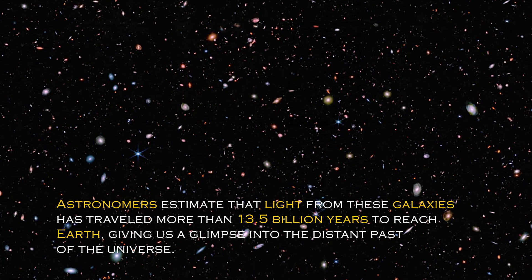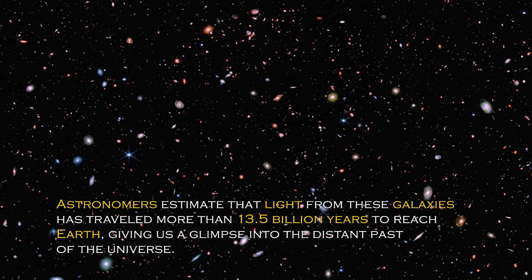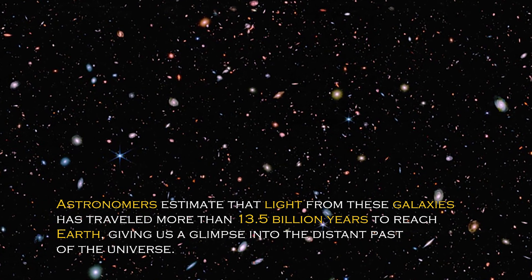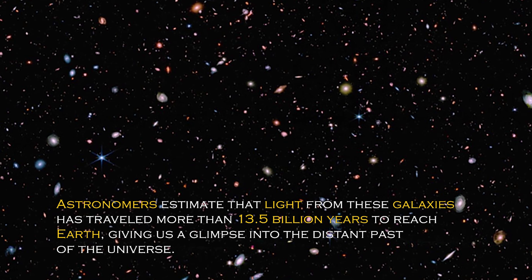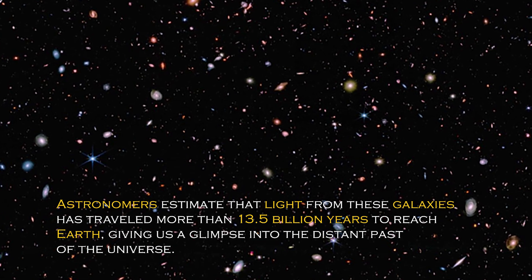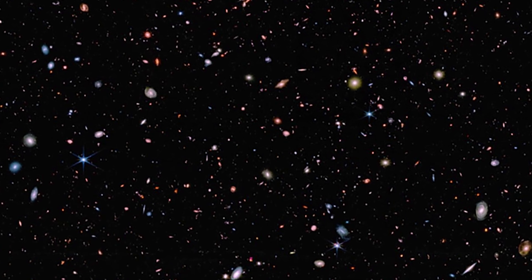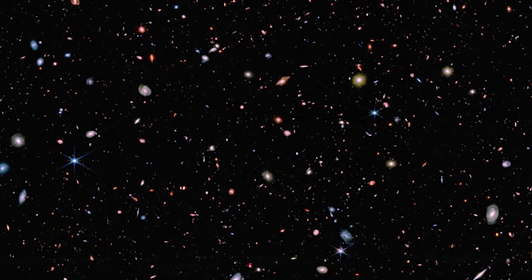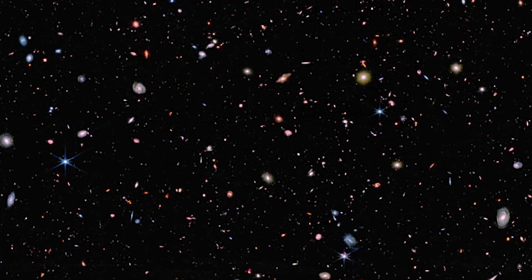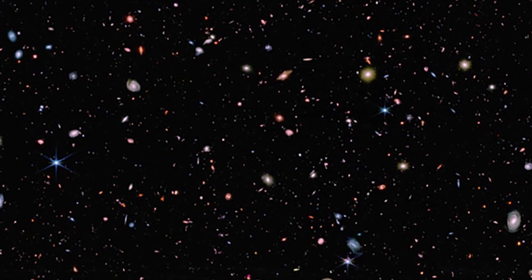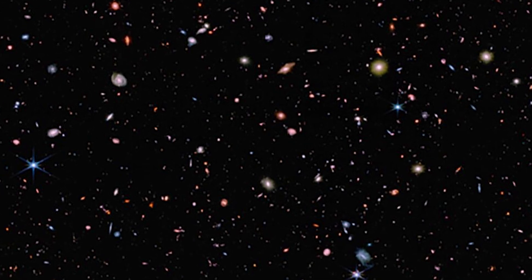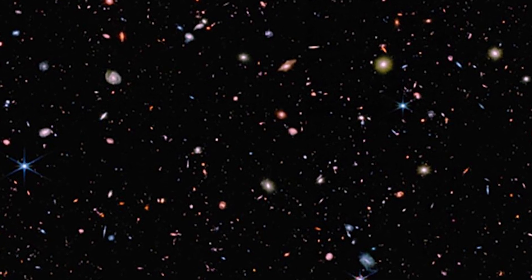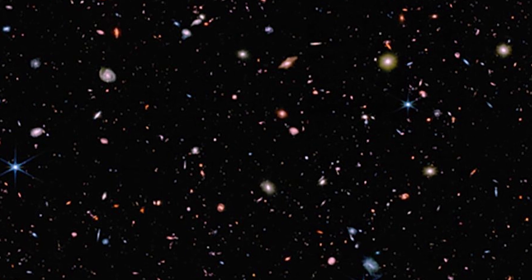Astronomers estimate that light from these galaxies has traveled more than 13.5 billion years to reach Earth, giving us a glimpse into the distant past of the universe. These galaxies were discovered when the universe was young, which sheds light on how quickly the first generations of galaxies emerged. The spectral data confirmed that these galaxies are at the edge of our view, some even farther away than Hubble could see.